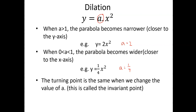The turning point will not change — it will stay the same as the turning point in the basic graph. In other words, the turning point will still be at the point 0, 0. We call this the invariant point.